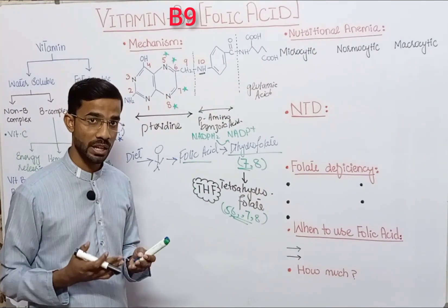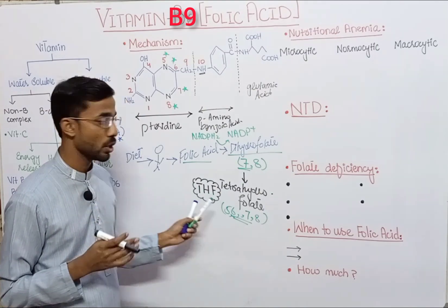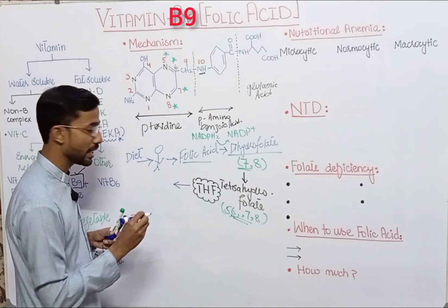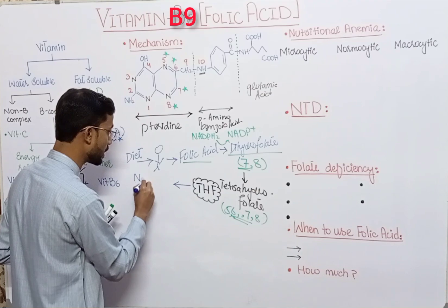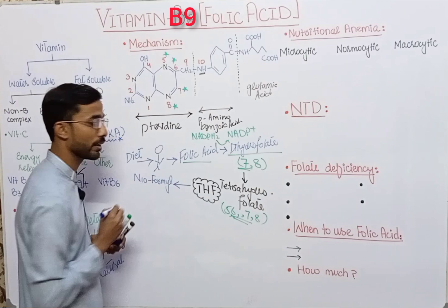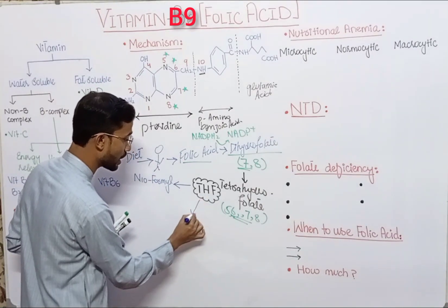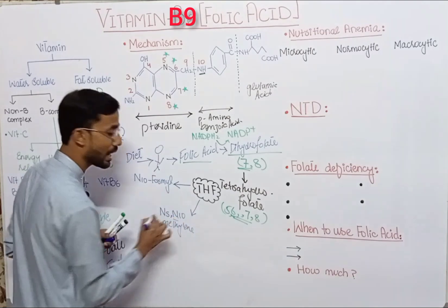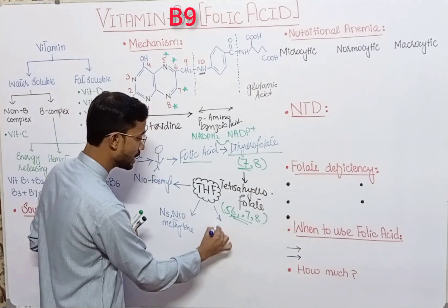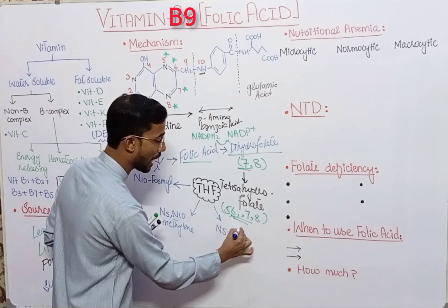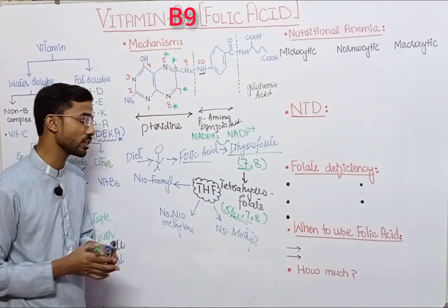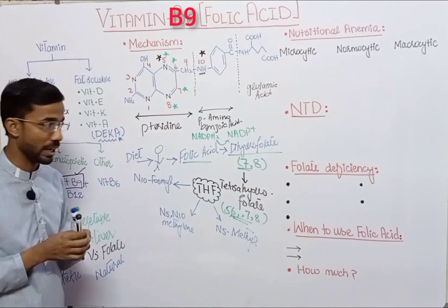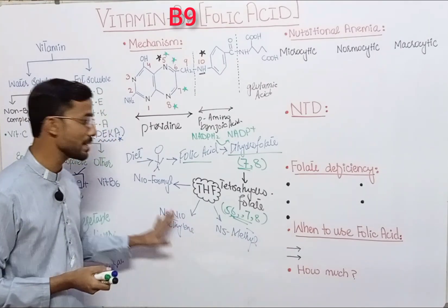There are some modifications that happen in tetrahydrofolate. Basically three modifications occur. First, at positions five and ten you will see the addition of the formyl group. Second, at positions five and ten you will see the addition of the methylene group. Third, at the N5 position you will see the methyl group. So these are the three modifications: formyl, methylene, and methyl.